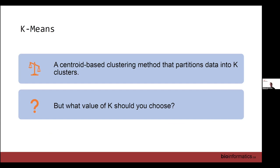K-means is a centroid-based clustering method that partitions data into K clusters. But what value of K should you use? How many clusters? That's something we'll be addressing in the walkthrough lab. Essentially what it does is it iteratively identifies centroids and calculates how far the actual observations are from each of the cluster centroids.